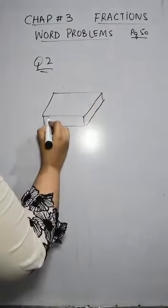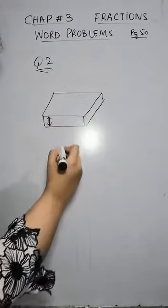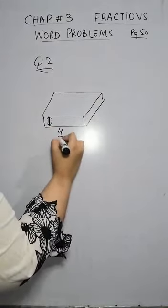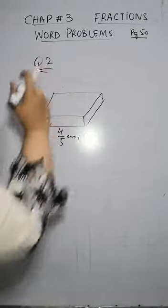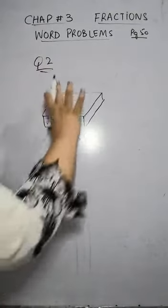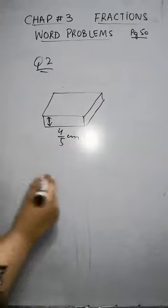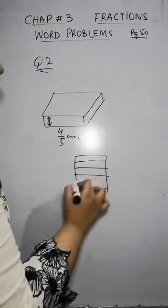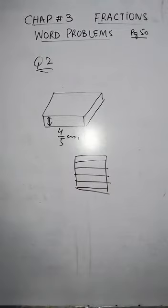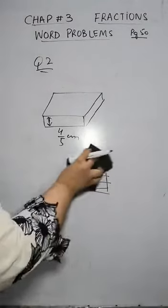This thickness is four over five centimeter. Now they have asked if one book is four over five centimeter thickness, what is a bundle of nine books? You have to tell how much total thickness is.